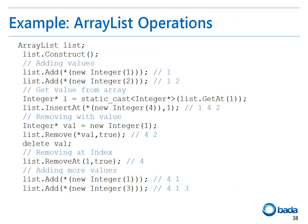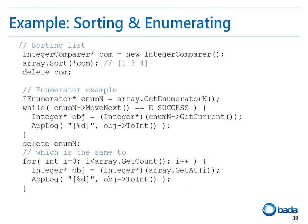As mentioned before, the items in a list are created in the heap memory. You can use the getAt function to get the object at a specified index. You can also insert an object into a specific index of an array. The next example shows how to delete an object from a list. This example also shows how to sort the items of an integer array.